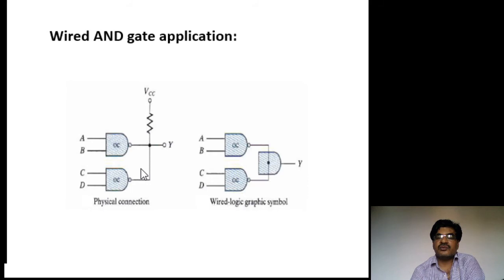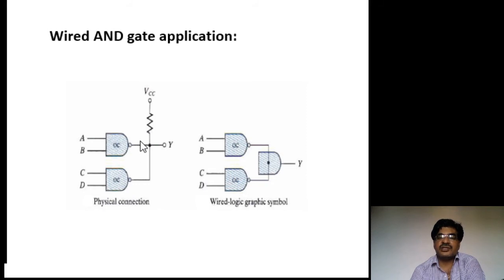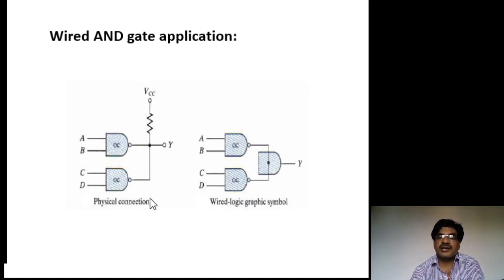Y becomes 1 only when both NAND gate outputs are equal to 1. If any NAND gate output is zero, the output is a short-circuited voltage. When a NAND gate output is zero, transistor Q3 acts as a short circuit. Since both are in shunt connection, if one is short-circuited the total connection acts as a short circuit, so output becomes zero. Therefore this junction point acts as a wired-AND gate.